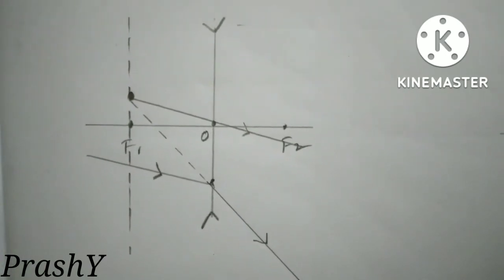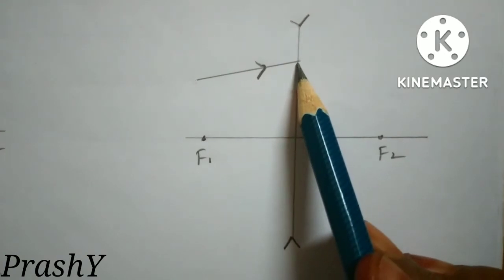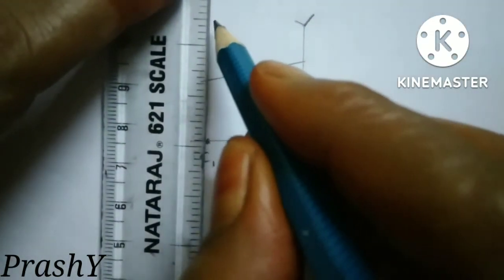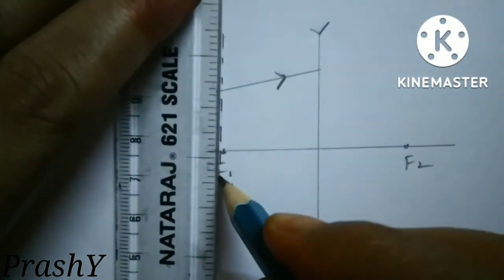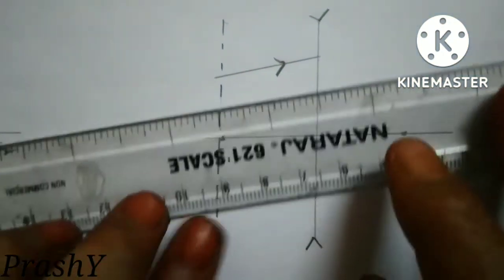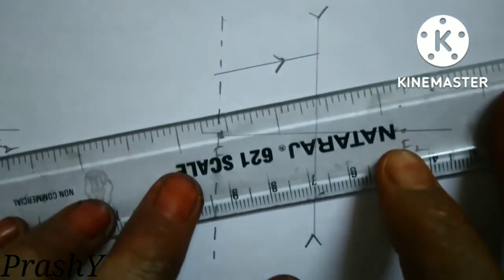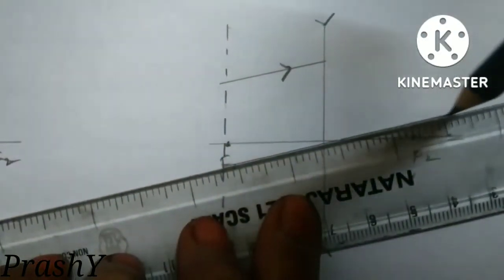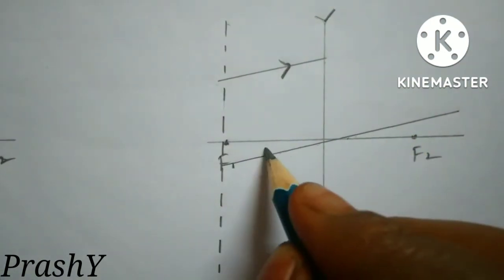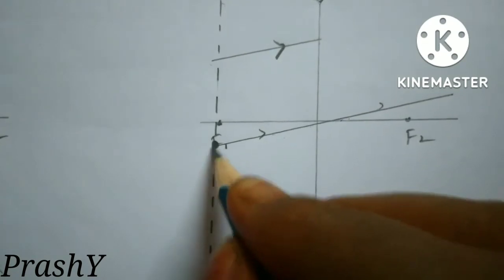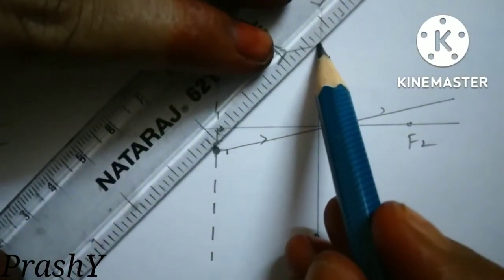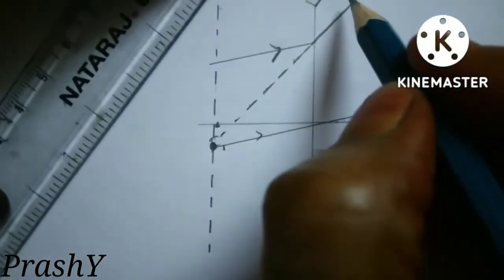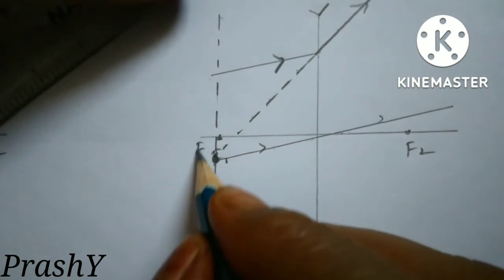Let us check one more example for a concave lens. This is the incident ray and this is the concave lens. The ray is making some angle with the principal axis, so draw the focal plane. Bring a parallel line through the optic center. This is the point of incidence. This is the focal plane — join these two with a dotted line up to the lens and then a straight line. This is F1, the virtual focus.